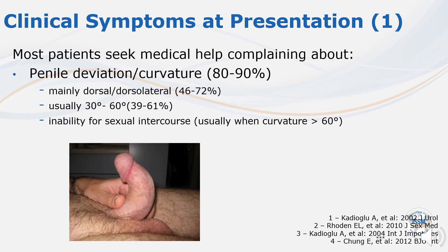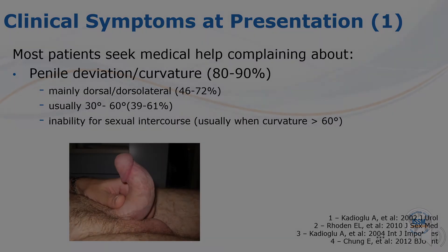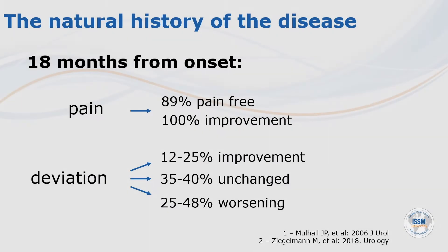At presentation, they usually have curvatures in the 30 to 60 degree range, with penile deviation greater at the early stage of the disease and decreasing with time. Of interest, improvement in penile deviation has sometimes been observed even after many years with the disease.